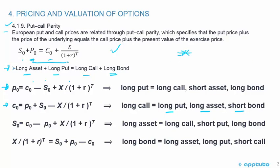All the practice questions become a word game. They give you the most likely or least likely way to create a synthetic put or synthetic call, and you match it up. I always say: write out the formula once, then rewrite and adjust it to match the question. These questions are not difficult because you're memorizing one formula and just rearranging it.